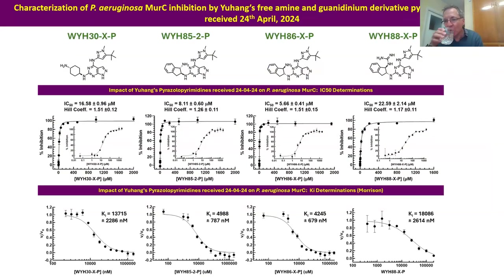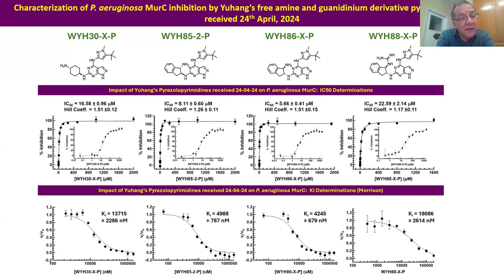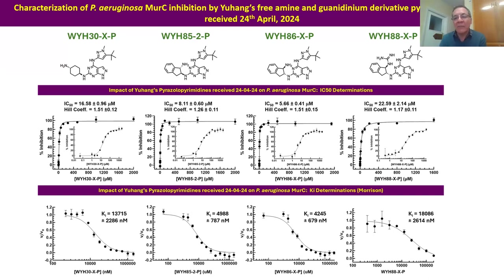Where we have data which suggests we have inhibitors that bind tightly, we use a Morrison equation to extract a KI from the data. So Yuhang sent through four additional pyrazole pyrimidines. These were special because they were free amines, and therefore they had to basically be done rapidly.